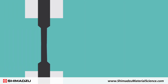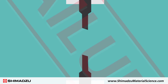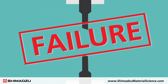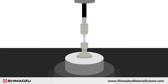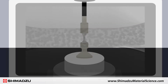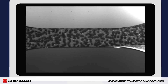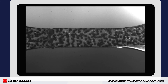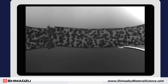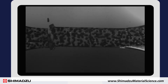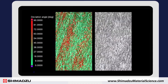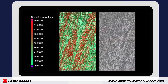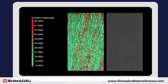When developing new composites, the evaluation of strength and failure behavior is critical. Common tests include mechanical and fatigue testing. High-speed impact testing and ultra-high-speed imaging are ideal for evaluating the fracture behavior of materials, while X-ray analysis provides an image of the internal structure of composites, such as fiber orientation.